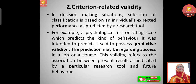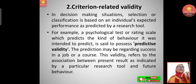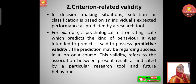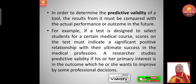The second type is criterion-related validity. In decision-making situations, selection or classification is based on an individual's expected performance as predicted by a research tool. A psychological test or rating scale which predicts the kind of behavior it was intended to predict is said to possess predictive validity. The prediction may relate to success in a job or a course, and this validity refers to the association between present results and future behavior.